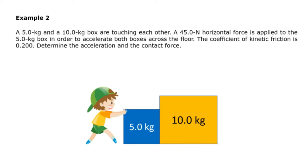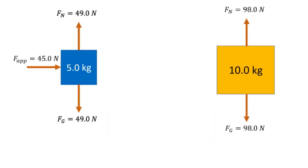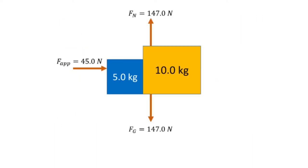Example two: a 5.0-kilogram and a 10.0-kilogram box are touching each other. A 45.0-newton horizontal force is applied to the 5.0-kilogram box to accelerate both boxes across the floor. The coefficient of kinetic friction is 0.200. Determine the acceleration and the contact force. In this case, we consider friction force because we are given the coefficient of kinetic friction. Since the values are similar to example one, we draw our diagrams similarly, but this time we consider our system as a whole.